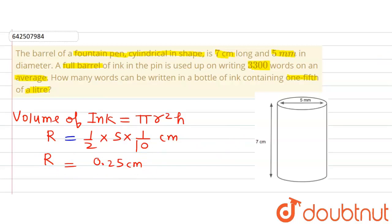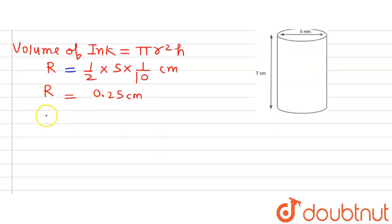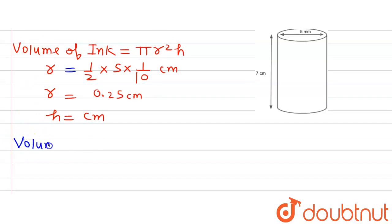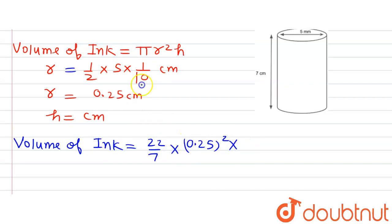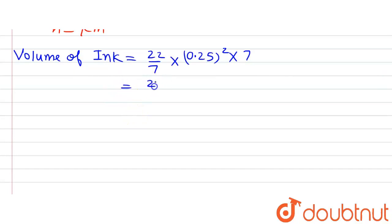The radius of the cylindrical barrel is 0.25 cm. The height is already given as 7 cm. Putting r and h into the formula, the volume of ink equals (22/7) × (0.25)² × 7. The 7s cancel out, leaving 22 × 0.0625, which gives 1.375 cm³.